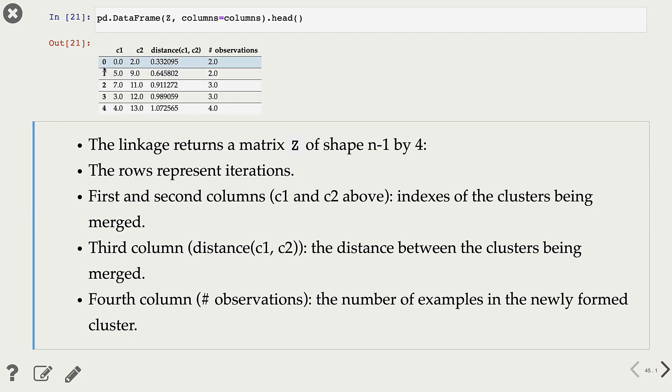So in our zeroth iteration, it's saying that cluster 0 and cluster 2 are going to get merged. Then this third column shows the distance between these two clusters. And the fourth column shows how many examples are there in this newly formed cluster.